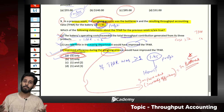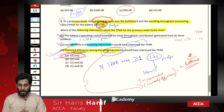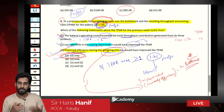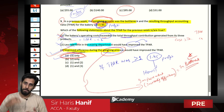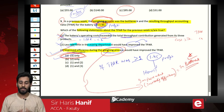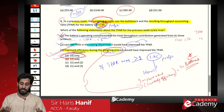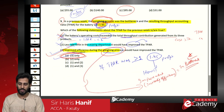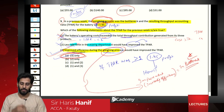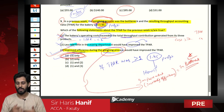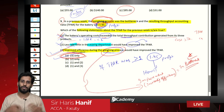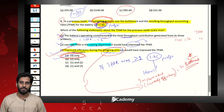We have completed the throughput accounting chapter. Your task is to revise this topic and this OTQ. Note the complexity of the question. Good luck with your revision. See you in the next class with a new topic. Bye-bye, take care.